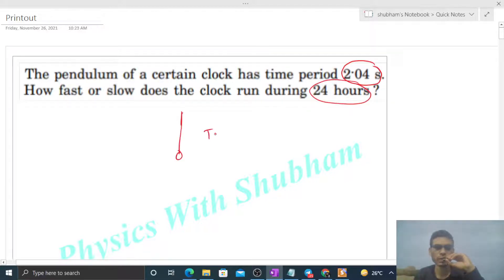So you can see, an ideal pendulum has a time period of 2 seconds. An ideal pendulum means a pendulum that shows correct time in a clock has a time period of 2 seconds. And here, what is the time period they require? 2.04 seconds. It means the pendulum is taking more time for the oscillation, which means this pendulum will run slow.